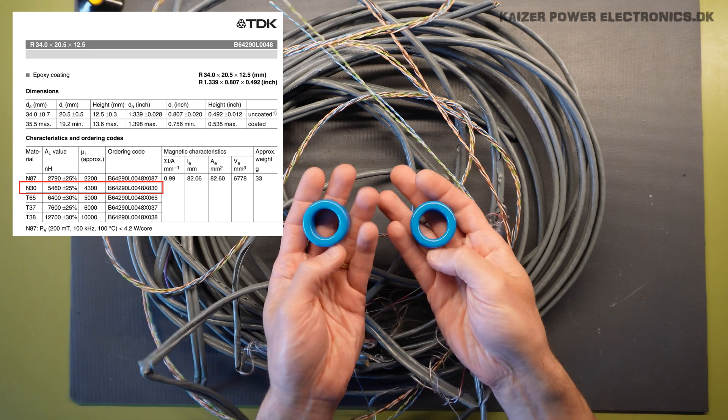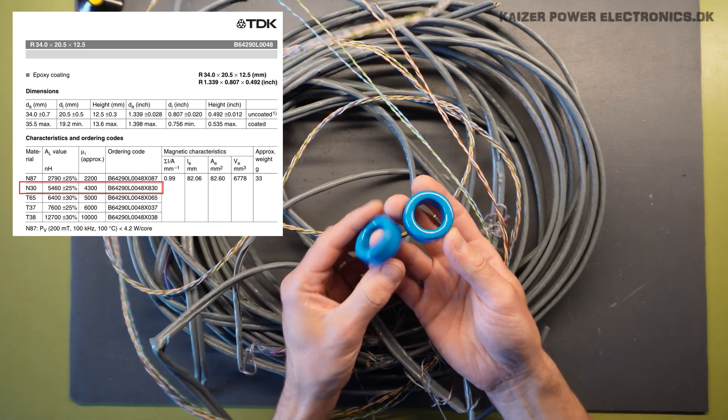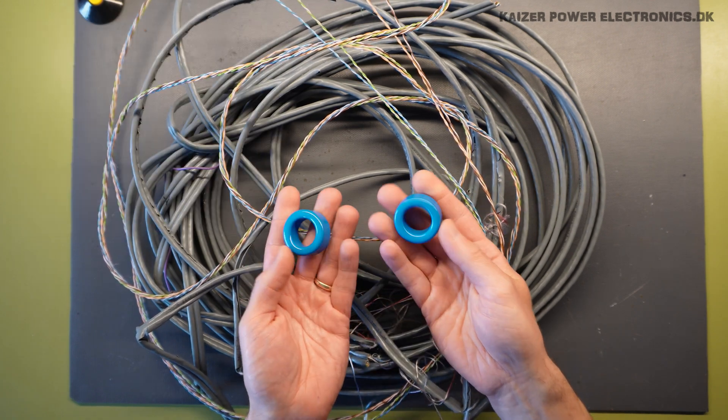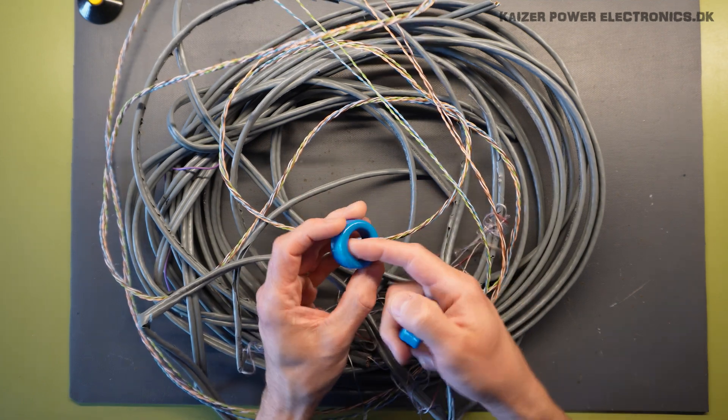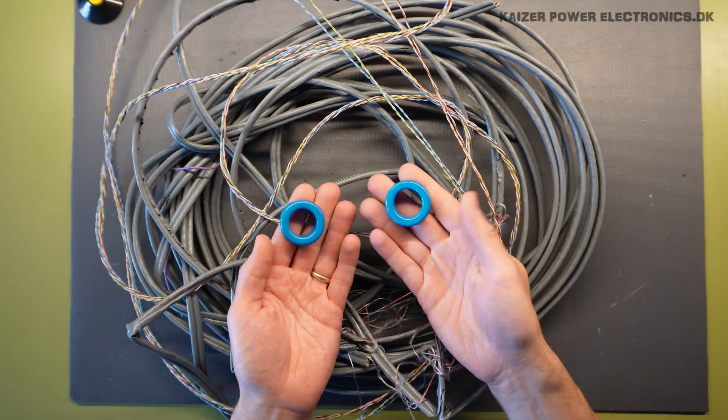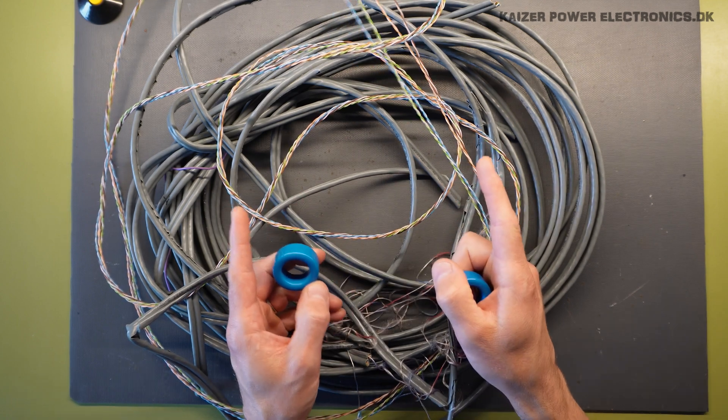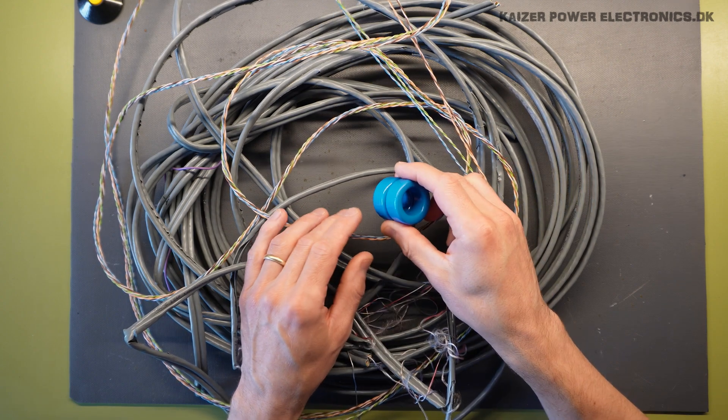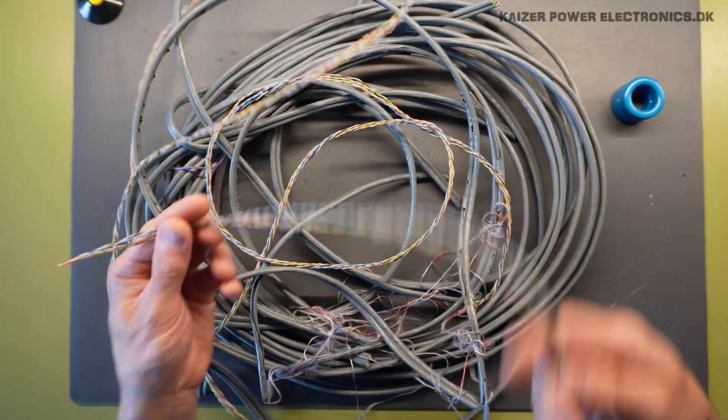The cores I am going to use are these two N30 cores. They are 5750 AL permeability. And as we did calculate we want something like 10 turns. And I am guessing it is something like 5 centimeters for a turn. We want 10 turns. So that equals to 50 centimeters. And maybe just add something like 15 centimeters for each end for the primary and secondaries. So we end up needing 80 centimeters of this.